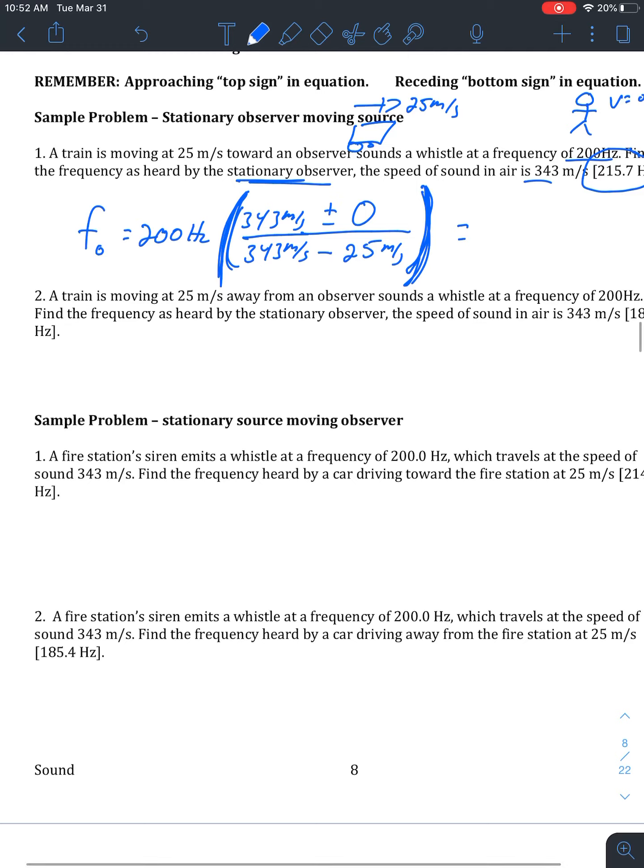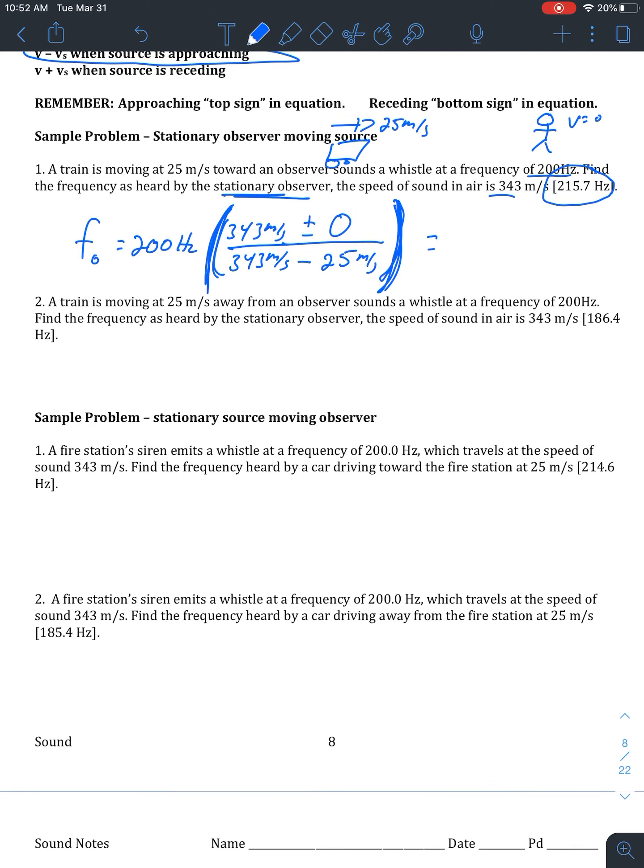Let's do one with stationary source moving observer. So in this case, we have a fire station emitting a whistle at 200 hertz again. And sound is still 343 meters per second. And the frequency heard by the driver or that we're looking for the frequency heard by the driver traveling at 25 meters per second. So basically the same numbers, but the scenario switched around. So we're looking for that observed frequency where the fire station was giving off that siren at 200 hertz.